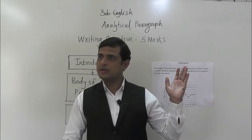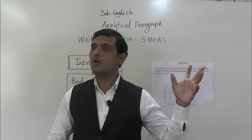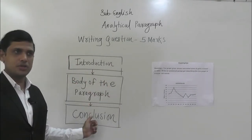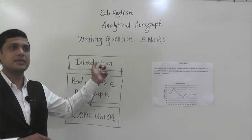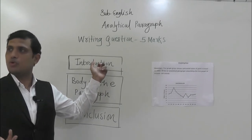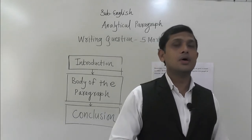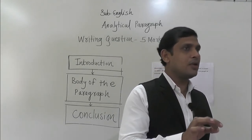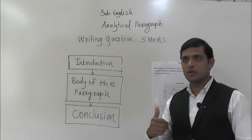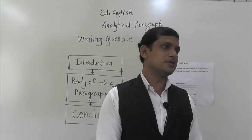To recap what we have learned: first, the guidelines for the analytical paragraph; second, the format — introduction, body of the paragraph, and conclusion. In the introduction, what exactly the paragraph is about should be written as briefly as possible. The body of the paragraph should be explained neatly, clearly, and accurately without any personal response — whatever is given. And in the conclusion, we summarize whatever we have explained in the body.